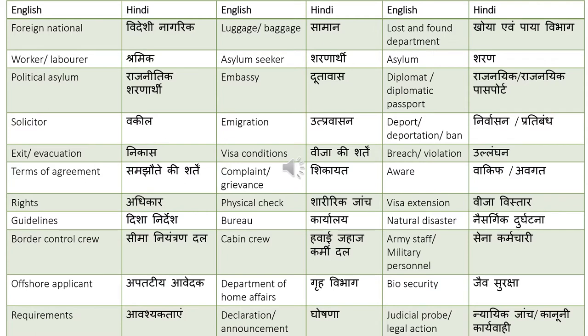Foreign national — videshi nagarik. Worker or a laborer — shramik. Political asylum — rajanitik sharanarti. Solicitor — vakil. Exit or evacuation — nikas. Terms of agreement — samjhote ki shartain. Rights — adhikar. Guidelines — disha nirdesh. Border control crew — seema niantran dal. Offshore applicant — apatatiya avedak.